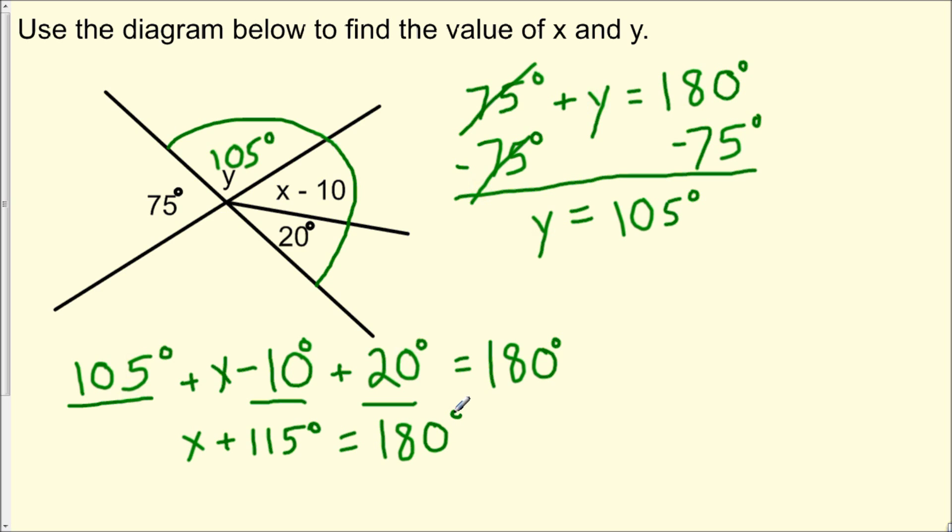So now to solve for x, all we need to do is subtract 115 degrees from both sides of this equation. And now we note on the left-hand side, 115 degrees minus 115 degrees cancels, leaving us with x equals 180 degrees minus 115 degrees, which is equal to 65 degrees.